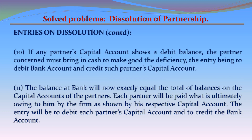Entry 10: If any partner's capital account shows a debit balance, the partner concerned must bring in cash to make good the deficiency, the entry being to debit Bank Account and credit such partner's Capital Account. Entry 11: The balance at bank will now exactly equal the total of balances on the capital accounts of the partners. Each partner will be paid what is ultimately owing to him, the entry being to debit each partner's Capital Account and credit the Bank Account.